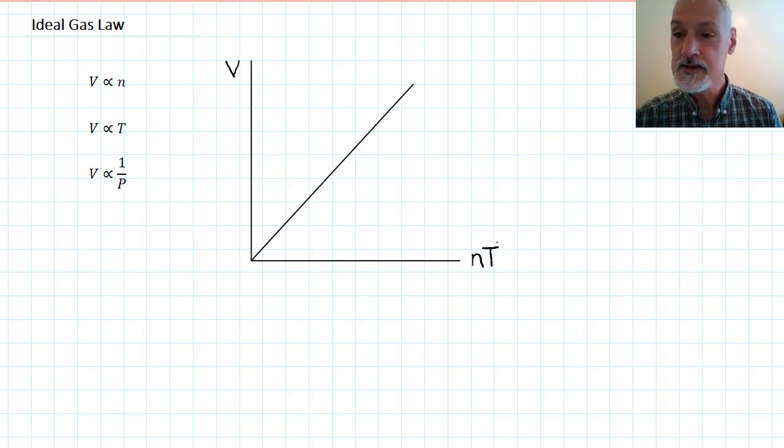Volume, however, is inversely related to the pressure, meaning 1 over the pressure. So a graph of volume versus the other three variables would look as follows.